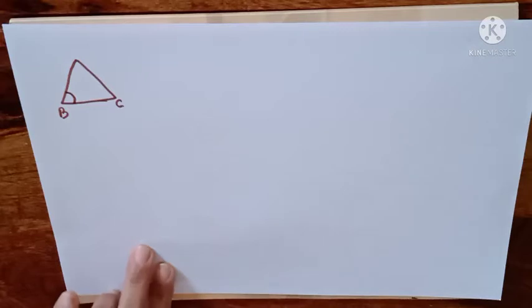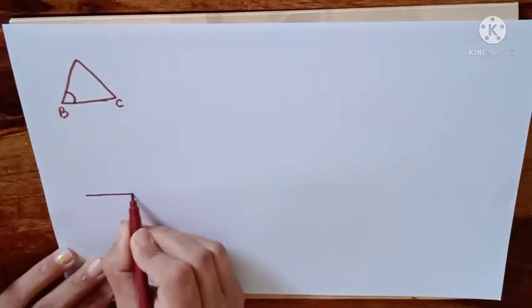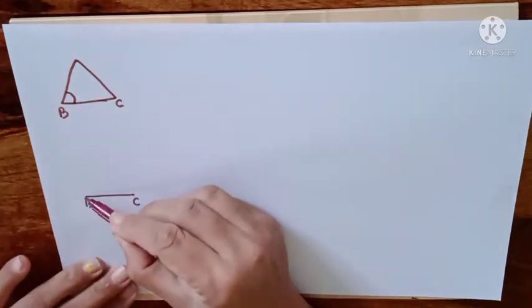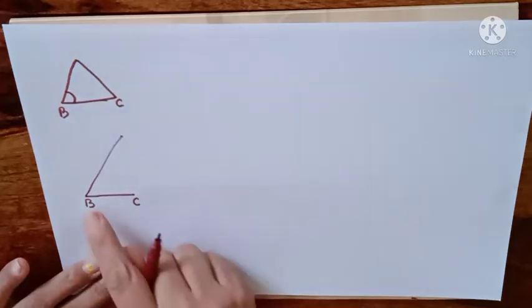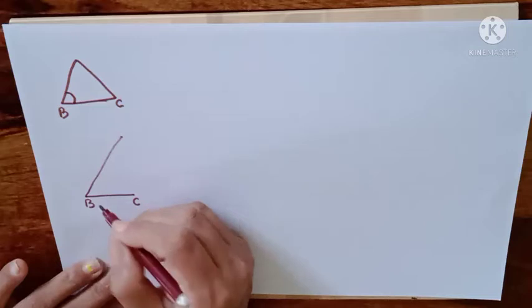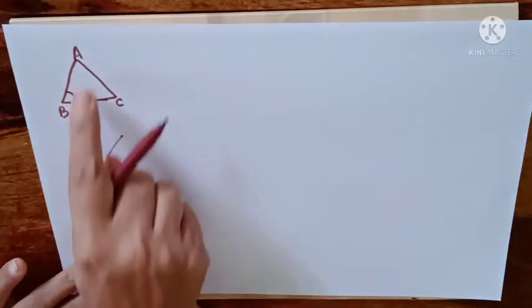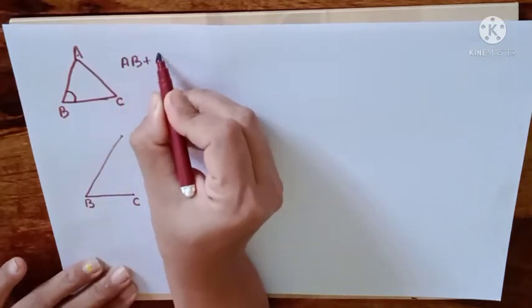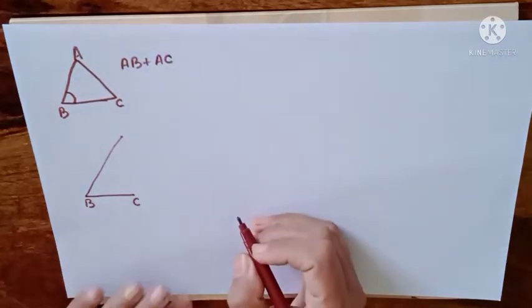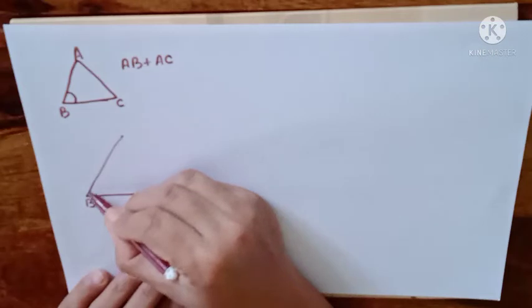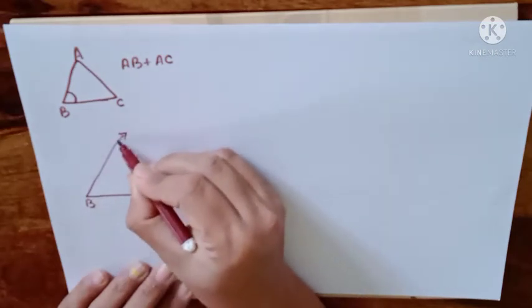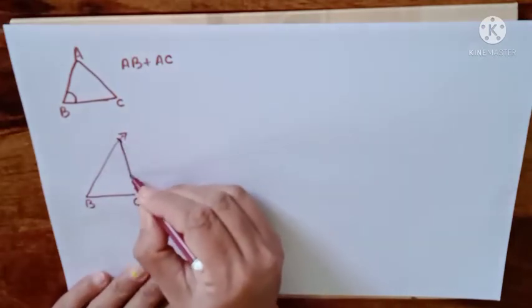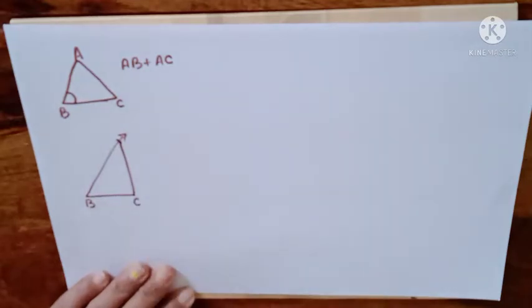First, what we will do is make the given base. Then we will draw the base angle. The two sides AB plus AC are given as their sum, so we are going to cut AB plus AC on the ray from B. On this ray, you will mark a cut for the sum of two sides, and then join that point to C.